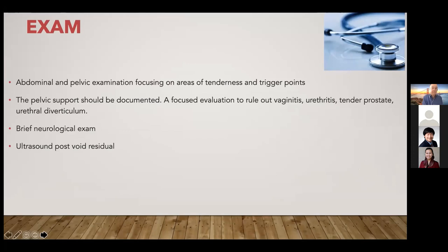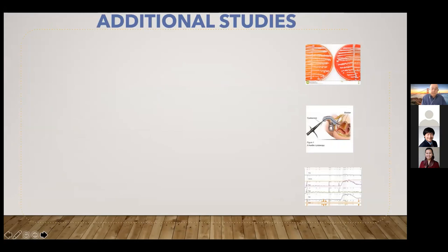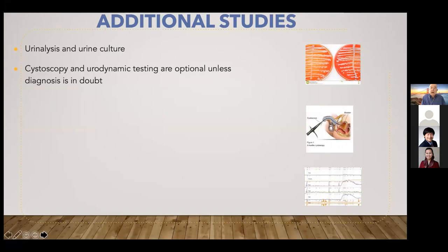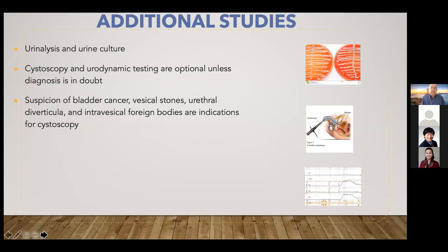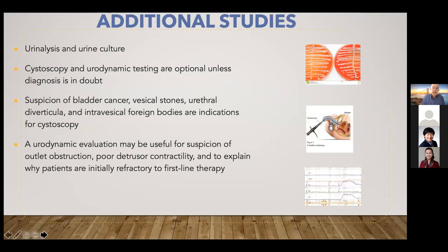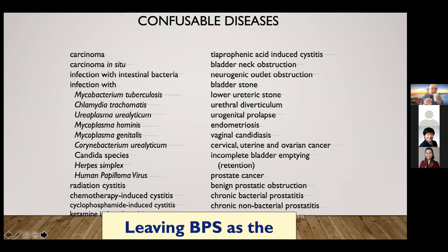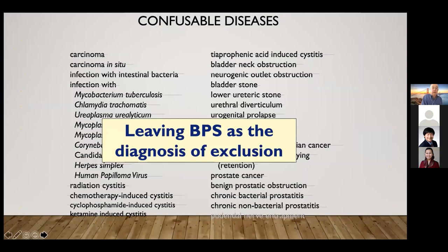Ultrasound post-void residual is very important. For additional studies, urinalysis and urine culture are necessary. Cystoscopy and urodynamic testing are optional unless the diagnosis is in doubt — suspicion of bladder cancer, vesicle stones, urethral diverticula, or intravesical foreign bodies would be an indication for cystoscopy. Anyone with microscopic hematuria needs a standard hematuria evaluation. Urodynamics can be useful for suspicion of outlet obstruction, poor detrusor contractility, or to explain why patients are initially refractory after first-line therapy. You can rule out the confusable diseases and leave bladder pain syndrome as a diagnosis of exclusion.